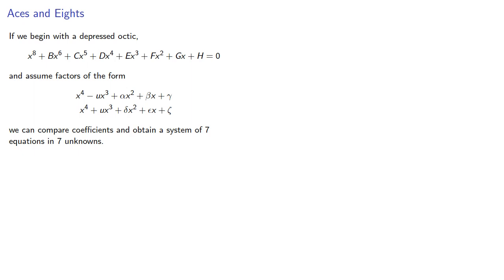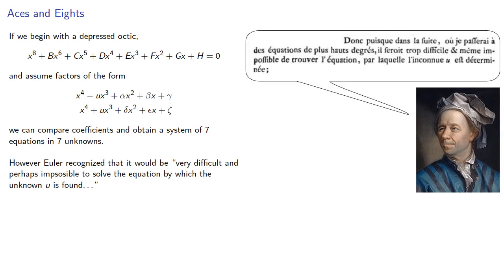Unfortunately, these are non-linear equations, and Euler recognized that it would be very difficult and perhaps impossible to solve the equation by which the unknown u is found.